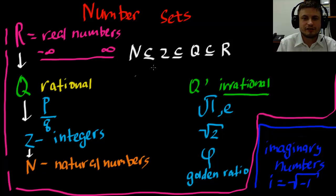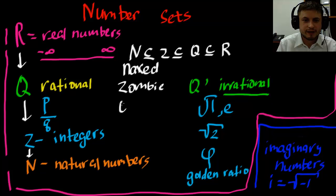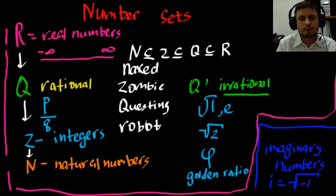So in order to remember this N, Z, Q, R, I kind of came up with a funny mnemonic that really helps me to remember it. And it's naked zombie questing robot. So imagine this naked zombie robot and it's going on a quest and that will help you kind of remember this N, Z, Q, R. And that's really the order of number sets that you should try to memorize.